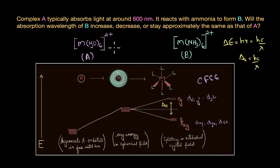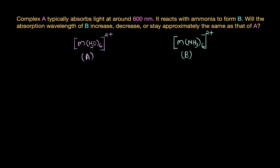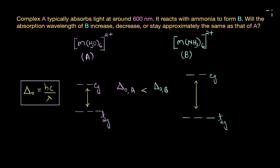In complexes A and B, the metal has the same oxidation state. Water and ammonia are both neutral ligands, so the oxidation state of the metal in both is +2. The only differentiating factor is the nature of the ligands. We know that ammonia is a much stronger ligand than water. A stronger ligand exerts a greater electric field on the metal ion and causes a larger splitting in the d orbitals, so the delta naught of complex B would be larger than that of complex A.